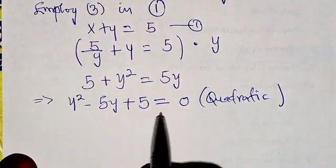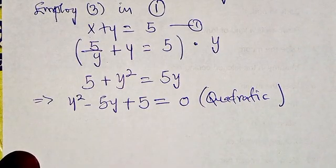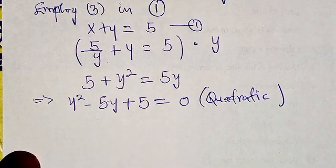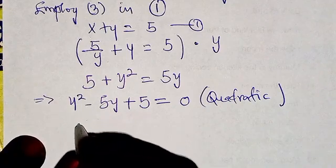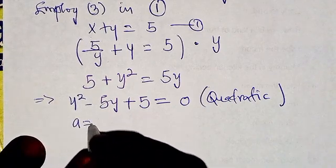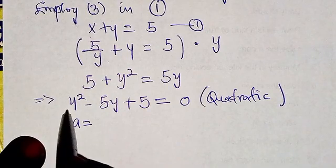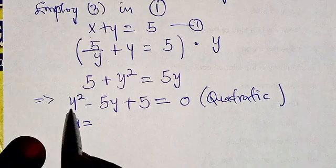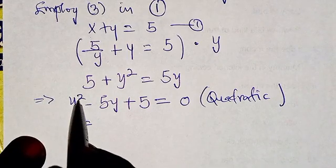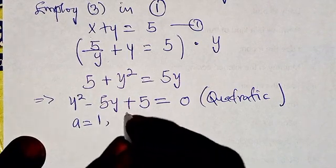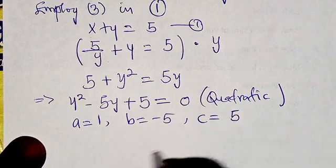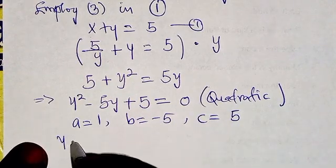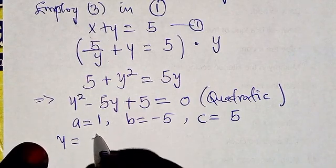We are going to solve this using the quadratic formula. We need to identify the values: a is the coefficient of the leading variable with power two, which is 1. b is negative 5, and c is the constant term, which is 5.